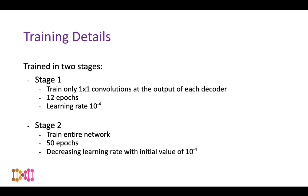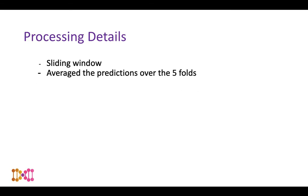The network was trained in two stages. In stage one, we trained only the 1×1 convolutions at the end of the decoder for 12 epochs with a learning rate of 10⁻⁴, because PanNuke has a different number of classes and these final convolution layers needed adaptation. In stage two, we trained the entire network for 50 epochs, starting at a learning rate of 10⁻⁴ which was decreased during training. For inference, we used a sliding window approach and averaged predictions over all five folds.